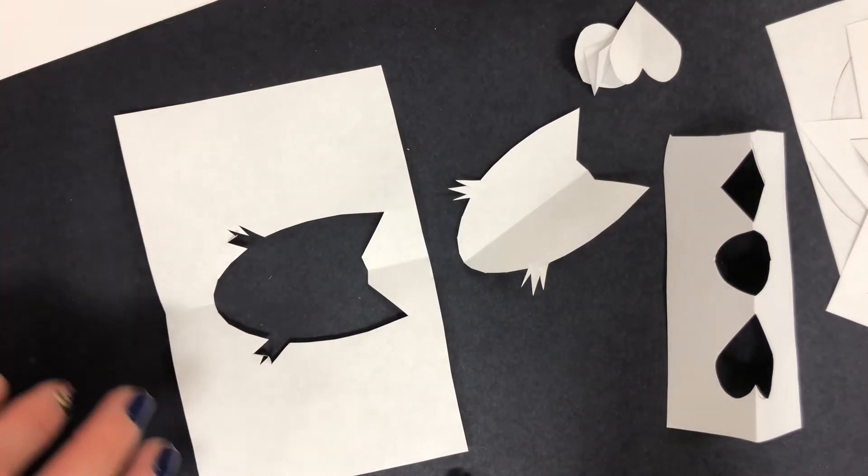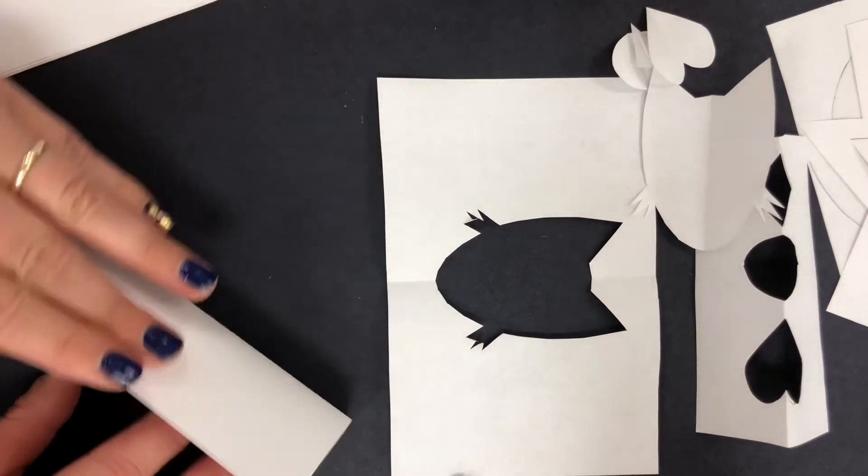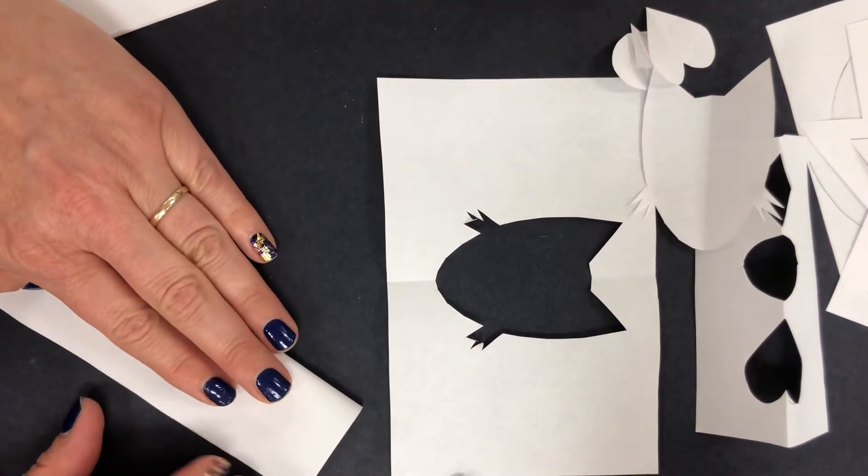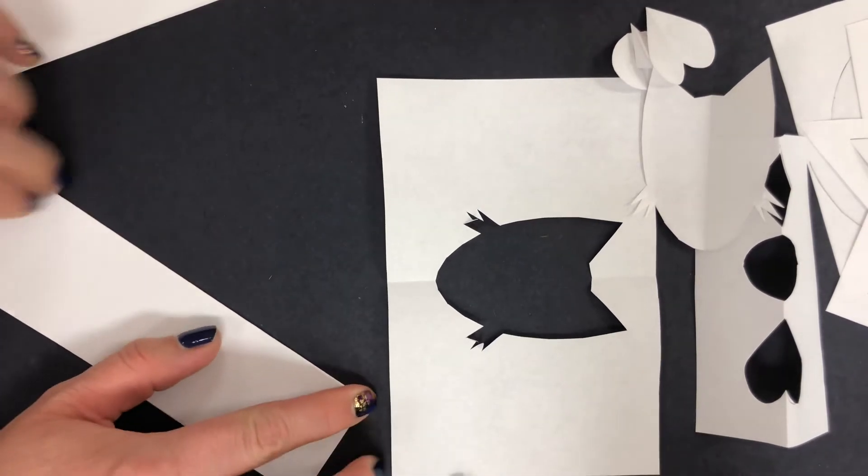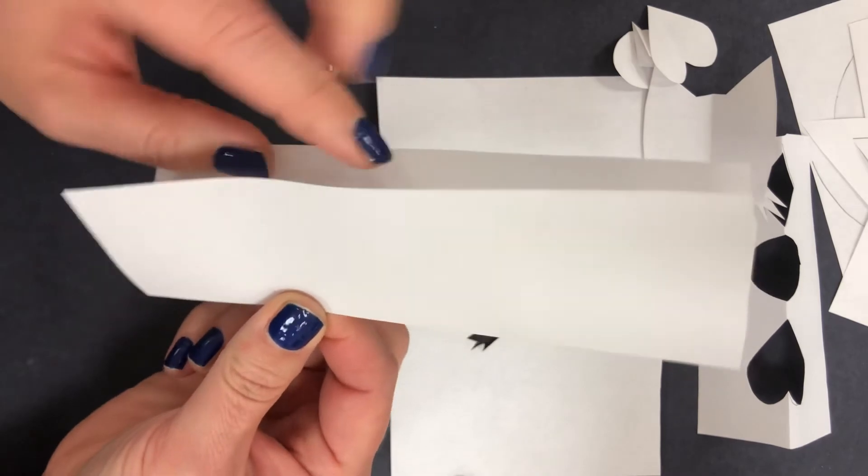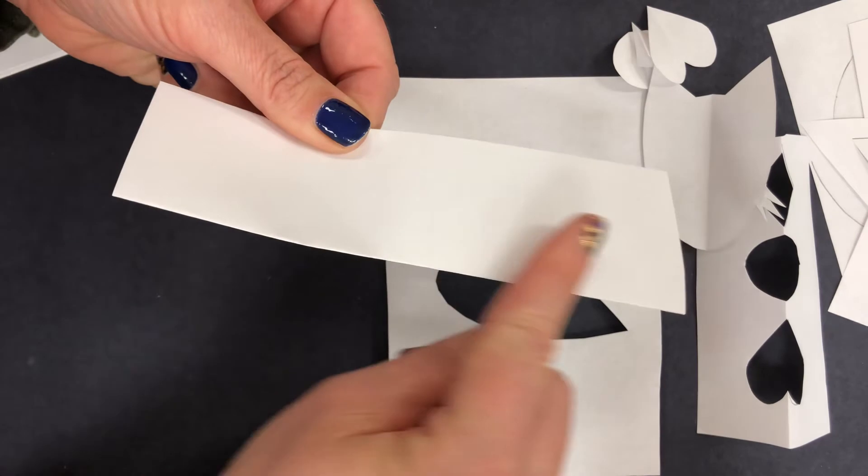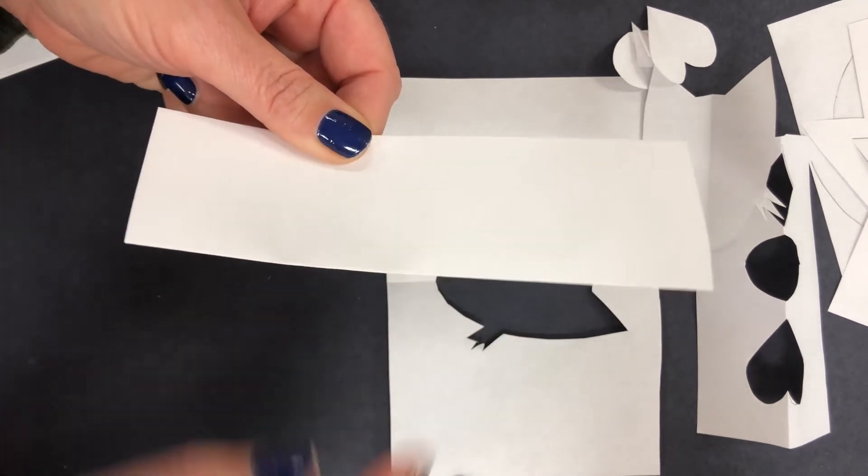Or you could also take your paper, fold it in half, and if you don't want to draw anything first, you could just do some freestyle cutting. But you want to make sure that you're not cutting on the open part. Nope, you want to cut on the folded part because it's called cut on a fold.